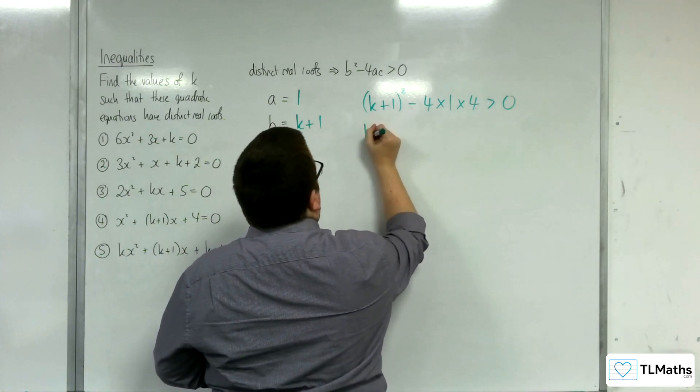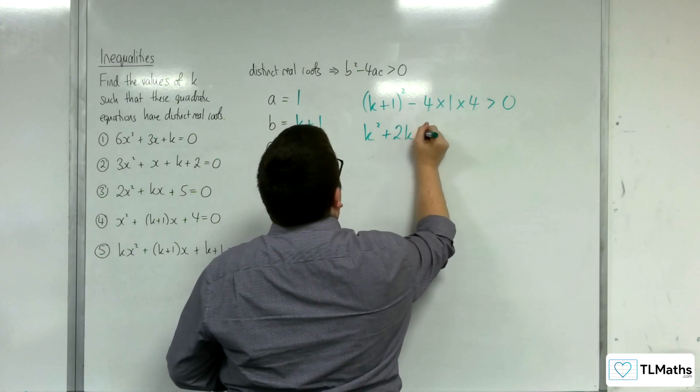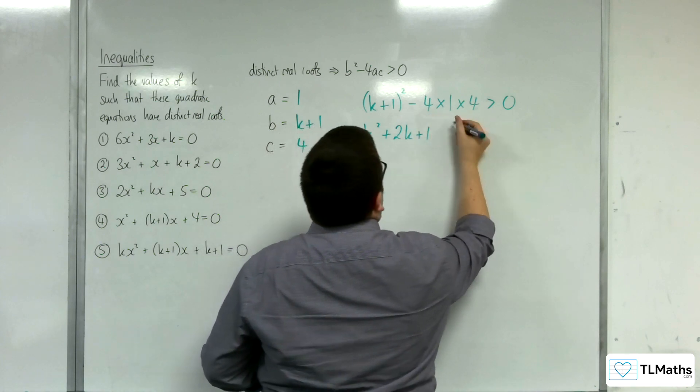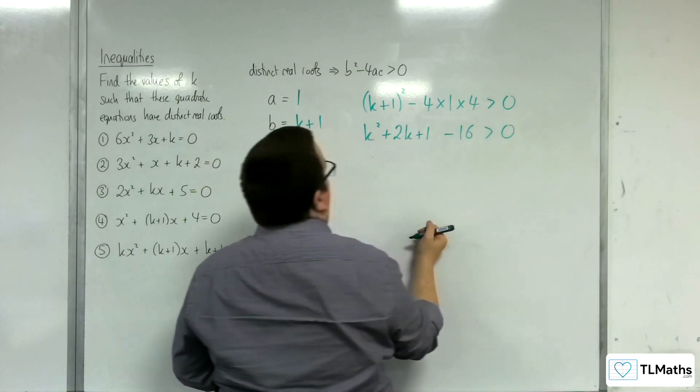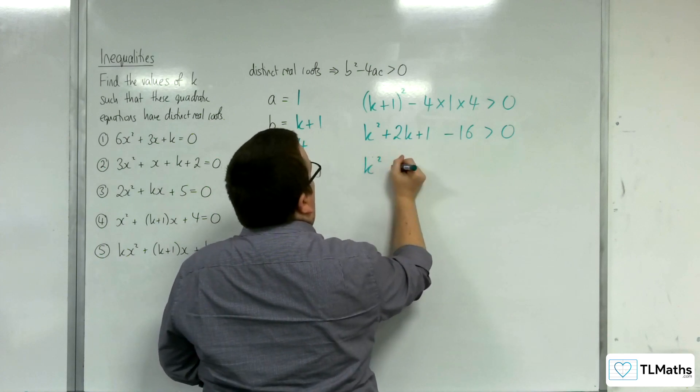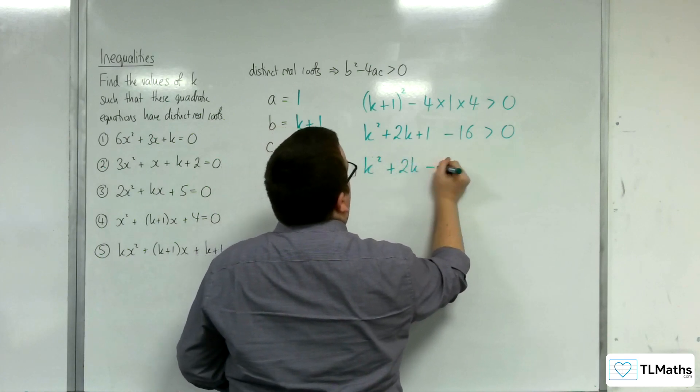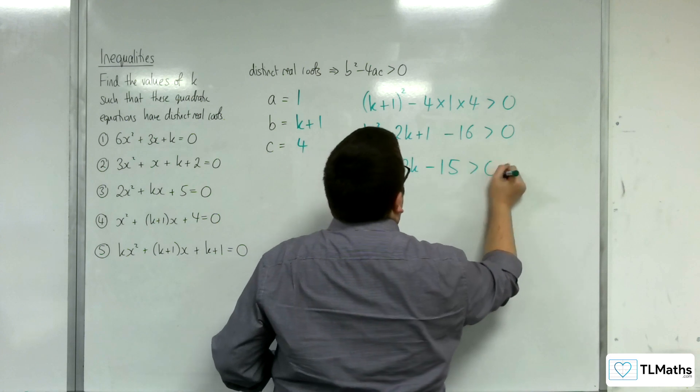Expanding this double bracket, k squared plus 2k plus 1, and we're taking away 16, is greater than 0. So, k squared plus 2k minus 15, is greater than 0.